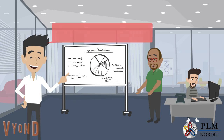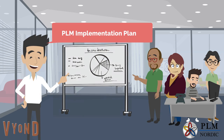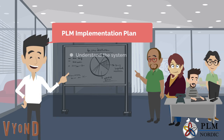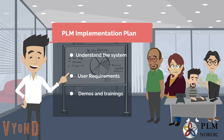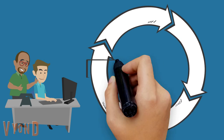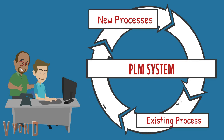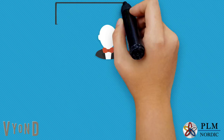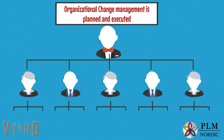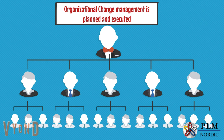A detailed implementation plan is made which gives enough time to users to understand the system, explain their requirements, and see demos and trainings. Existing processes are mapped to new processes in the PLM system. Organizational change management is planned and executed.